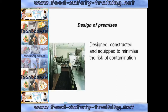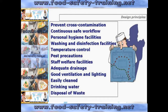Kitchen premises should be designed, constructed and equipped to minimise the risk of contamination. There are several design principles that must be taken account of. First of all, when designing a food premises, you must look at preventing cross contamination.